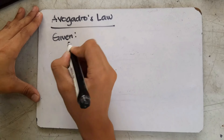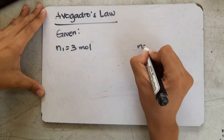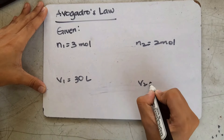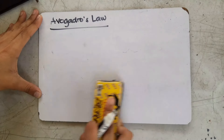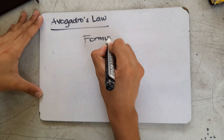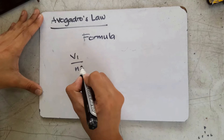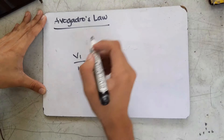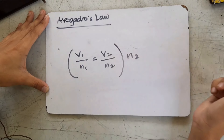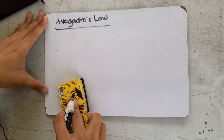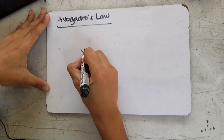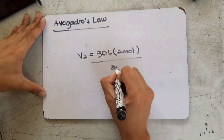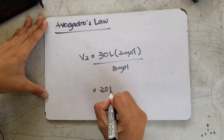To solve, first list the given values: N1 is equal to 3 mole, N2 is equal to 2 mole, Volume 1 is equal to 30 liters, and Volume 2 is unknown. In Avogadro's Law, since volume and number of particles are directly proportional, the formula is V1 over N1 equals V2 over N2. To isolate V2, multiply both sides by N2, then assign values: 30 liters times 2 mole over 3 mole. The answer is 20 liters.